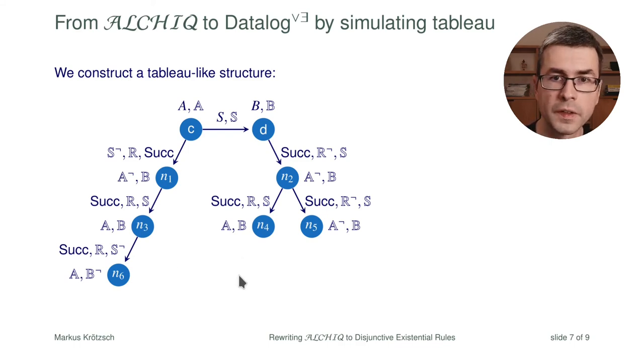The challenge with this like in any tableau is that we would like this to stop at some point. We would like to terminate. In tableaus usually this is done by blocking. The technique we adopt here is also a blocking-like technique which is somewhat similar to pairwise anywhere blocking as it has been called for tableau. Meaning that we compare elements by not just comparing a single element like N3 and N4 but also their predecessors and the relationships between the element and the predecessor.